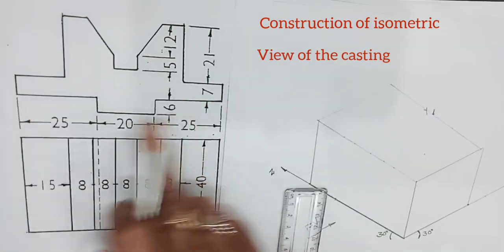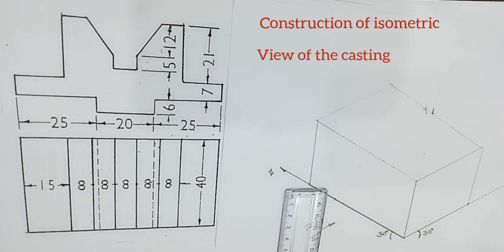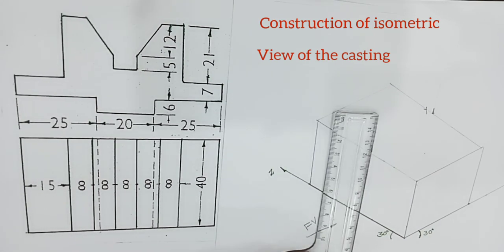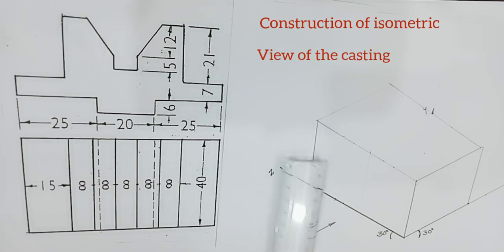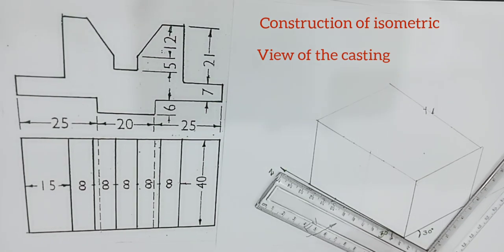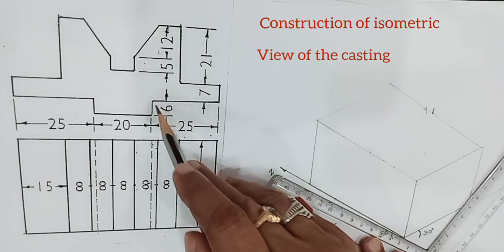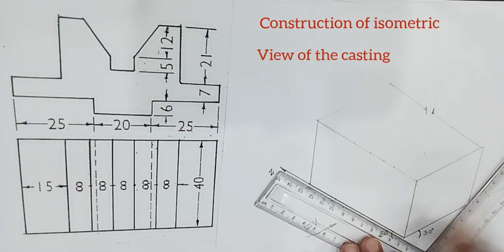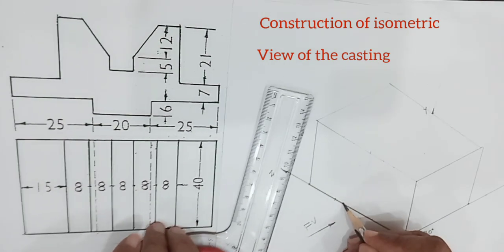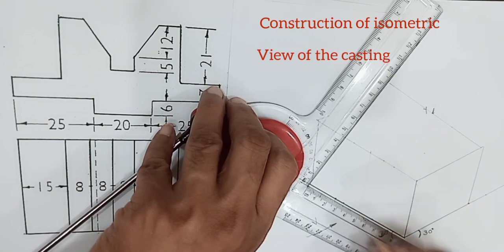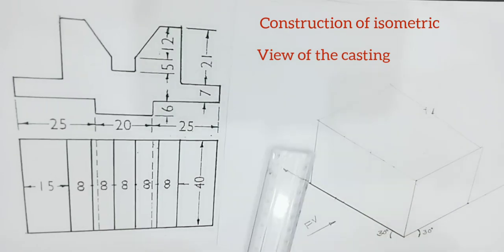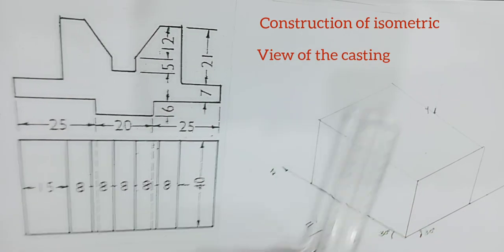First we will copy this front view from here to the front face. As a first step, I am drawing a middle line. After drawing the middle line in the length direction, from this end 25mm, from the other end 25mm, and the middle portion is 20mm. Here also 25mm on each side. After that, there is a height of 6mm.